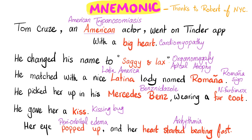Latina — Latin America. Romania — this is the Romania sign, which is periorbital swelling, and it's unilateral. Mercedes Benz — Benznidazole is the treatment. A fur coat — Nifurtimox is another treatment. He gave her a kiss — because the vector is the kissing bug. Her eye, just one eye, popped up — because it's unilateral periorbital swelling. And her heart started beating fast — this is arrhythmia due to cardiomyopathy, which leads to changes on the EKG.